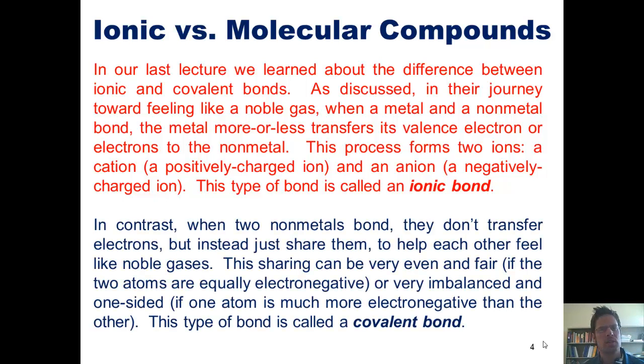In contrast, when two non-metals bond, they don't transfer electrons but instead just share them to help each other feel like noble gases. This sharing can be very even and fair if the two atoms are more or less equally electronegative, or very imbalanced and one-sided if one atom is much more electronegative than the other. This type of bond is called a covalent bond.